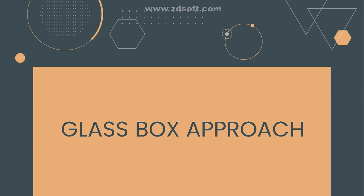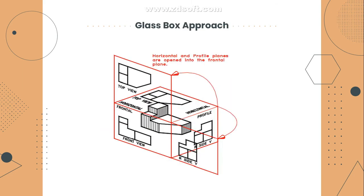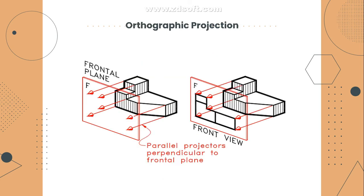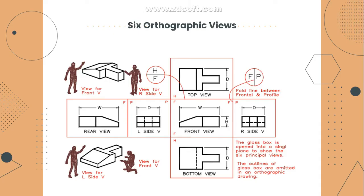We use the glass box approach to convert from multi-view to axonometric or vice versa. Imagine the object is inside a box, then project it forward for the front view, to the right for the right side view, and upward for the top view. There are 6 orthographic views: top view, front view, bottom view, right side view, left side view, and rear view. In a very detailed plan, all of these are included, as it's easier to identify all features of the drawing.